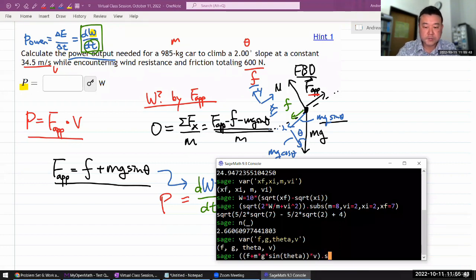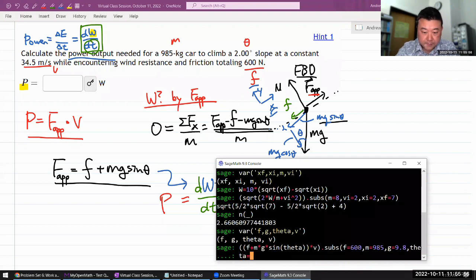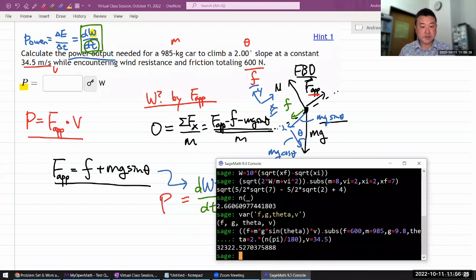I'll substitute in the numbers. The frictional force of 600 newtons, mass of 985 kilogram, gravitational constant of 9.8 in basic SI units. And theta, I have to be careful. Sage math only understands radians. So I have to take the two degrees and convert that into radians. So pi divided by 180. Let me put pi into decimal approximation. So I have theta. What else do I need? I need a V of 34.5. I think that's everything. Yeah. And the answer is 32,300 watts.